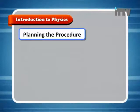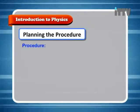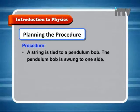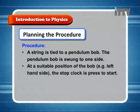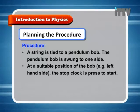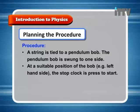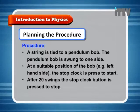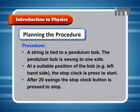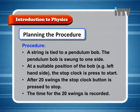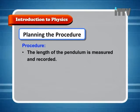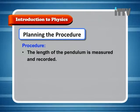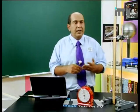Planning the procedure: a string is tied to a pendulum bob. The pendulum bob is swung to one side. At a suitable position of the bob — for example, the left-hand side — the stop clock is pressed to start. After 20 swings, the stop clock is pressed to stop. The time for the 20 swings is recorded, and the length of the pendulum is measured and recorded. This is how we're going to do the investigation.